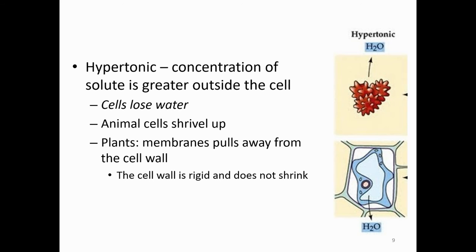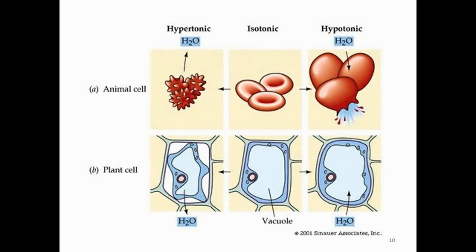The last solution type is hypertonic. In a hypertonic solution, there's a higher concentration of water inside the cell than outside, so the water will actually leave the cell — you can see the cells shrivel up. In an animal cell they won't function as well. In a plant cell, the cell membrane will pull away from the cell wall, but the cell wall still provides shape, so the exterior holds while the interior shrinks. Hypotonic causes swelling; hypertonic is the opposite.